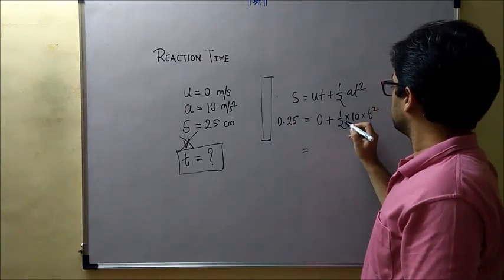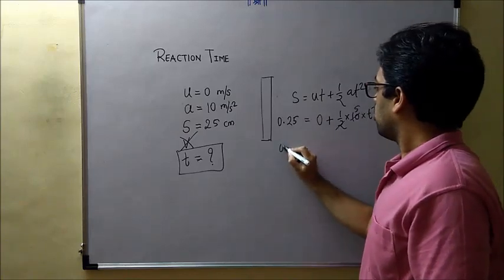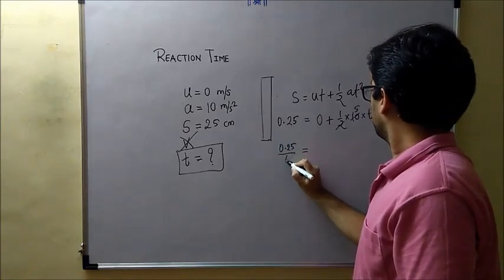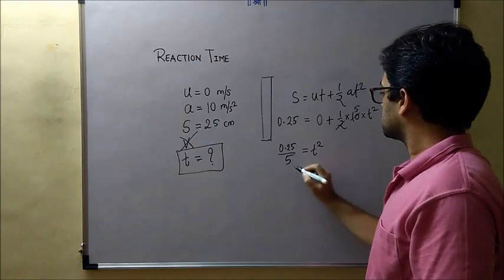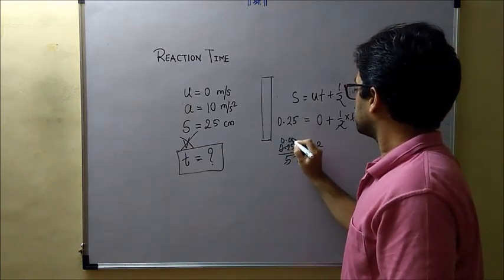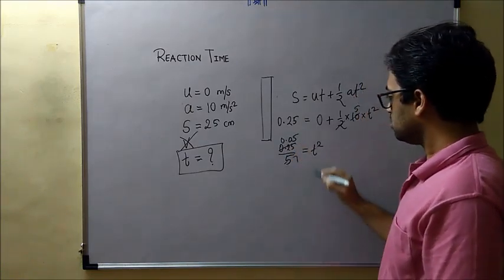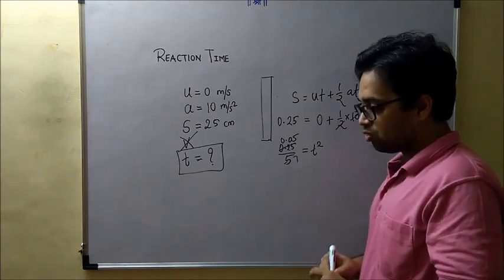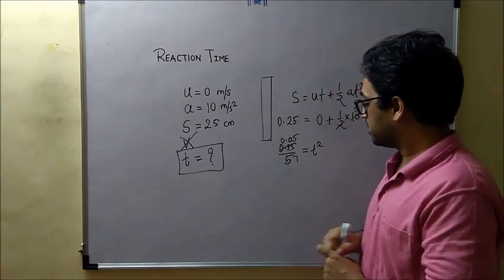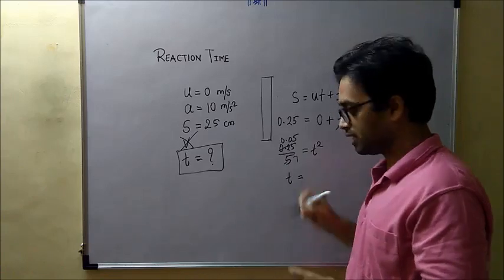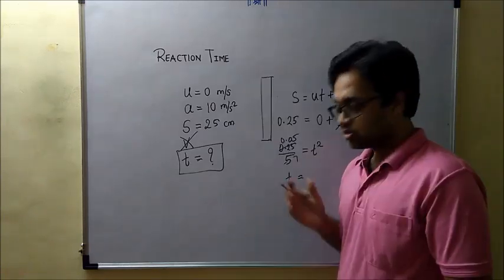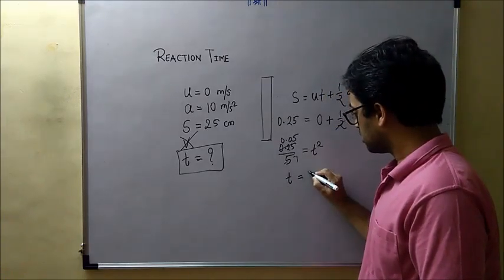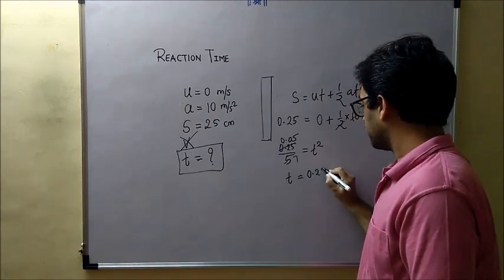Now that gives me 0.25 over 5, that is equal to t². So this will be 0.05 = t². Now a quick calculation we will do for finding t. I will be using my calculator for doing that.